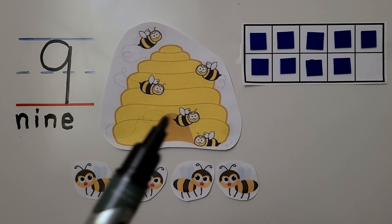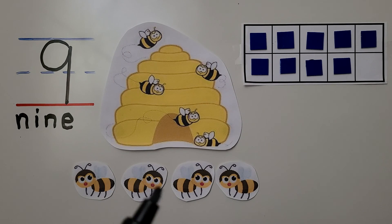We have some bees around this hive. We can count them: 1, 2, 3, 4, 5, then we have more - that's 5, 6, 7, 8, 9. There are 5 and 4 more. When we use a 10 frame to show 9, one frame will be empty.